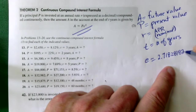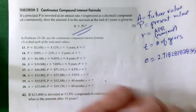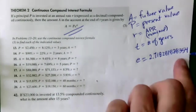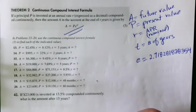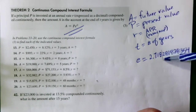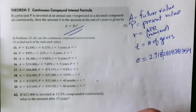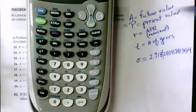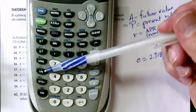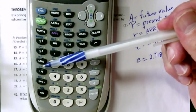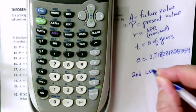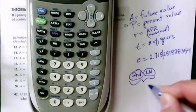If you type e into your calculator, you get approximately 2.71828... and the decimals continue — no repeating pattern, no terminating pattern. For our problems, stopping at 2.718 is close enough. On the calculator, e to the X appears above the natural log key. Pressing second then LN gives you e to the X and automatically inserts the caret for an exponent.